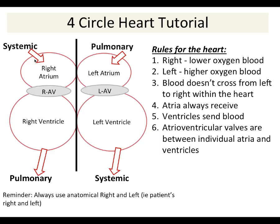The right AV valve is called the tricuspid because it has three parts, and the left AV valve is bicuspid because it has two. The left AV valve also has another name — the mitral valve — so don't let that throw you off. My rule for the AV valves is that they control flow within the heart, between the atrium and ventricle. The AV valve is open during ventricular diastole — when the ventricles relax, it allows blood to flow from the atrium to the ventricle, and this happens on both sides.